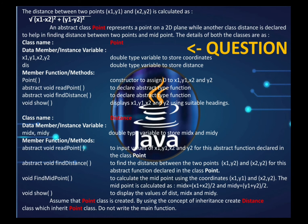Then there is void findMidpoint() to find the midpoint between the two points: midX = (x1 + x2) / 2 and midY = (y1 + y2) / 2, using the formula from the question. There is also a void show() function to display the values of distance, midX, and midY, and we need to call show() of Point from within the Distance show() function.